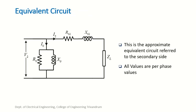This is the approximate equivalent circuit referred to the secondary side. The current I0 flows through the magnetizing branch consisting of R0 and X0. R02 and X02 are the equivalent resistance and reactance referred to the secondary side, where R02 equals R1-dash plus R2, and X02 equals X1-dash plus X2. ZL is the load impedance. All parameters are represented by their per-phase values.